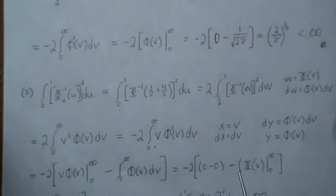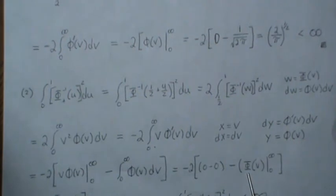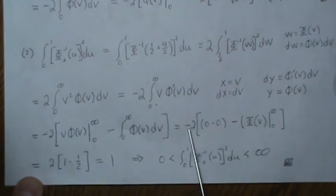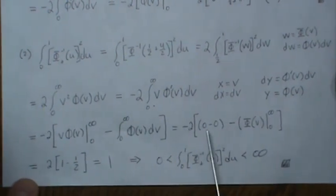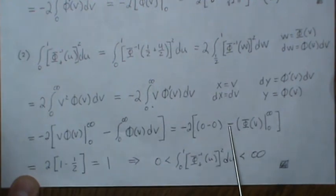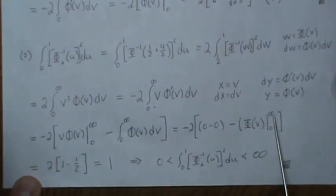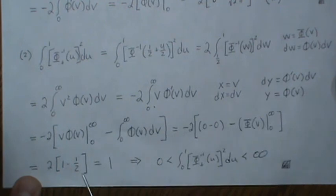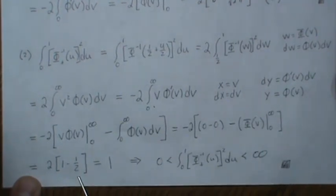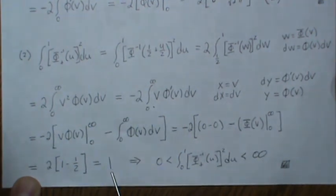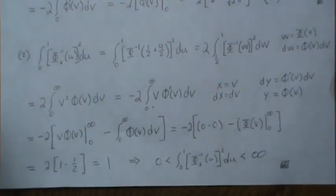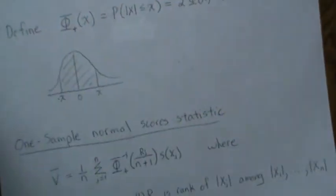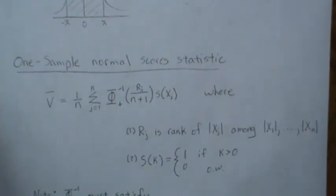Then minus the integral from 0 to infinity of phi(v) dv — the anti-derivative of the PDF is the CDF — evaluated from 0 to infinity. With the factor of minus 2 out front: plugging in infinity to the CDF gives 1, plugging in zero gives one-half, so the integral equals 1. That is positive and less than infinity, which shows the conditions hold for the one-sample normal score statistic.